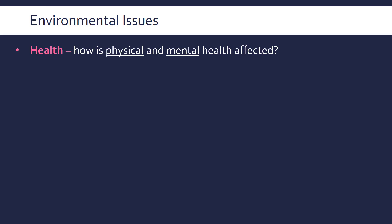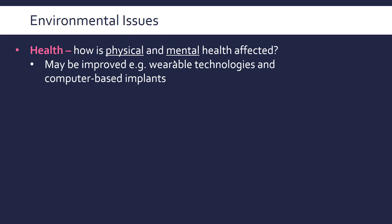A second category is environmental issues. First, health — how is our physical and mental health affected? Up until maybe 5-10 years ago only physical health would be really considered, but now mental health is much more important in the public perspective. Technology can actually improve health on an individual level — wearable technologies like smartwatches or Fitbits allow people to better understand their body. In the future, computer-based implants may help regulate the body. Negatively, social media may not be healthy especially for younger children, and technology can make young people less active.